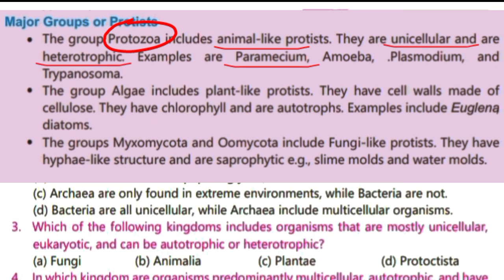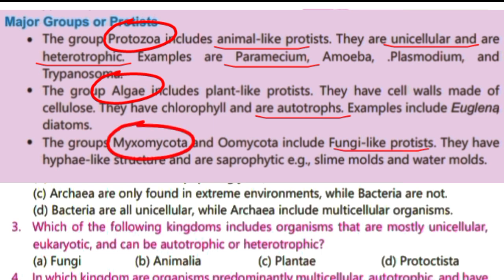The second group is Algae, which are plant-like protists — they are autotrophs, for example Euglena. The third group is Myxomycota, which are fungi-like protists, for example slime molds and water molds. So kingdom Protista includes organisms that are mostly unicellular, eukaryotic, and can be heterotrophic or autotrophic.